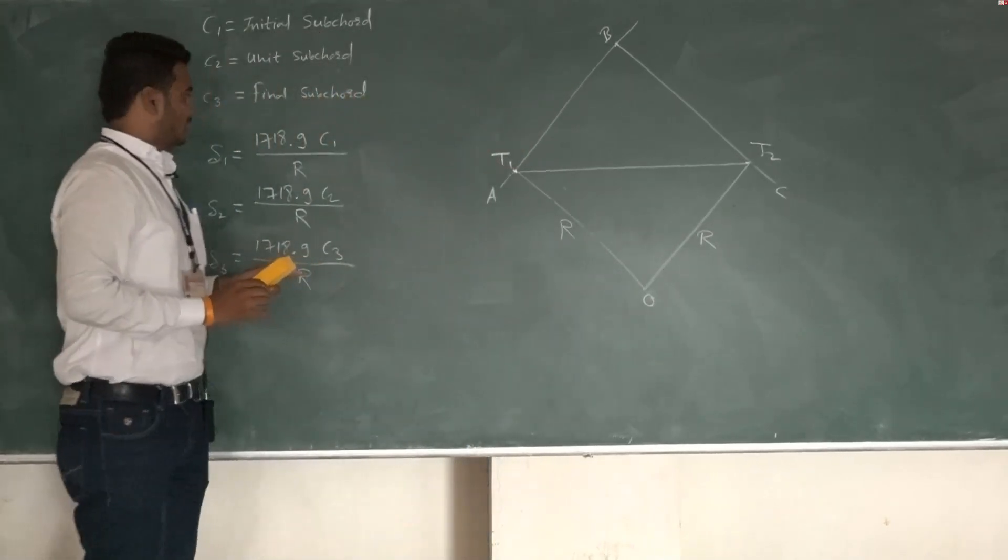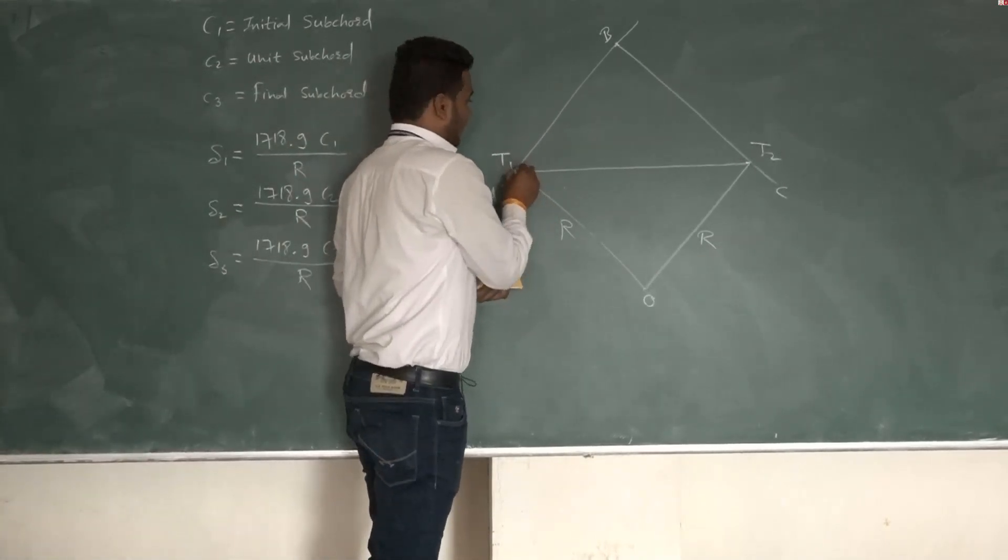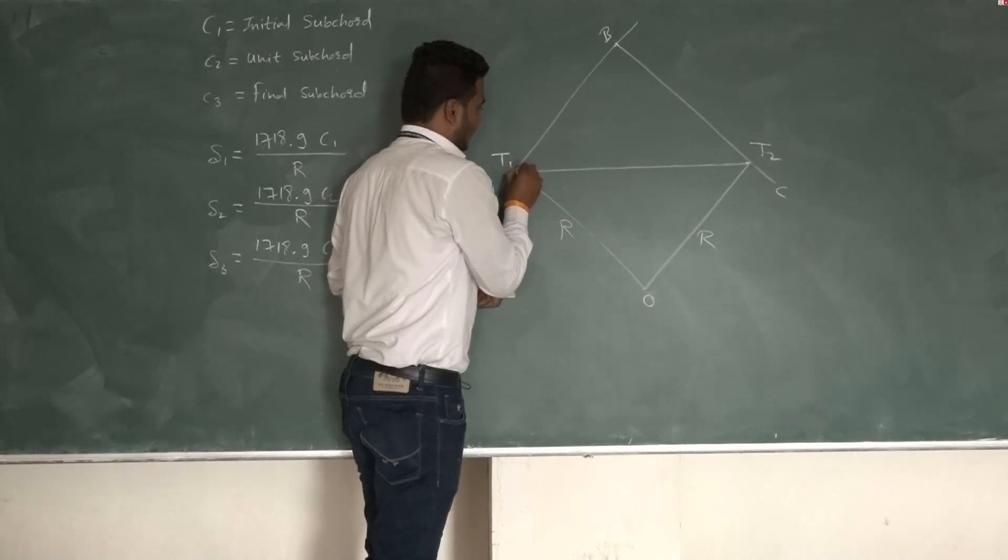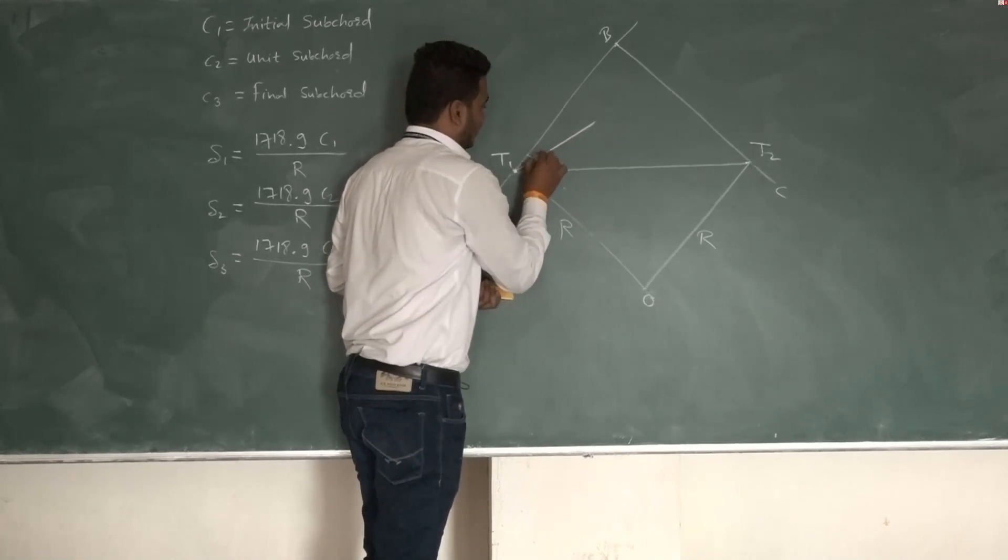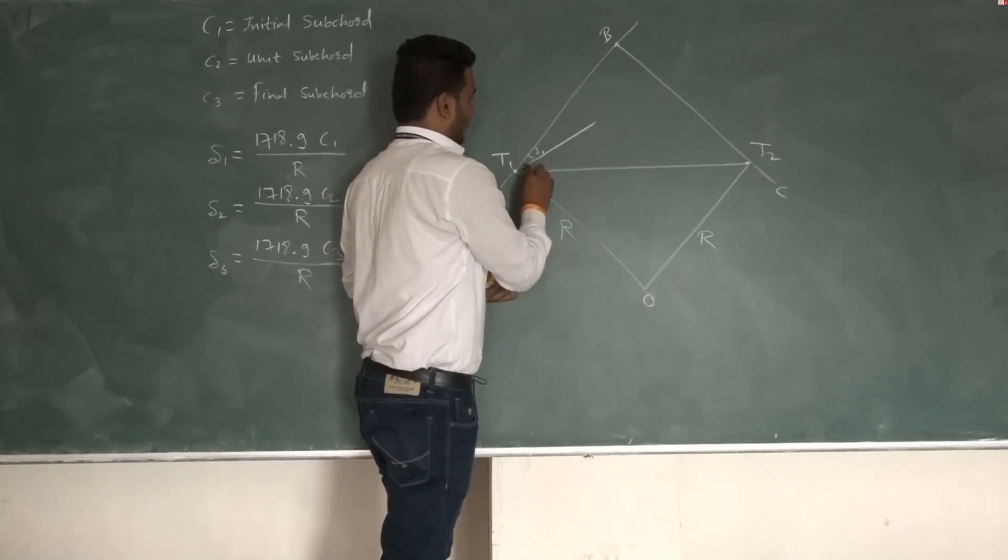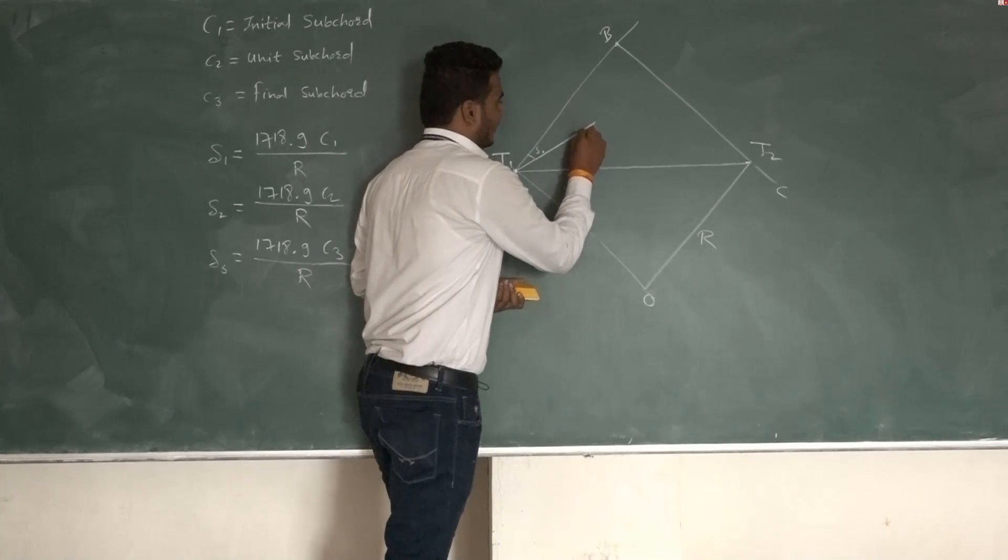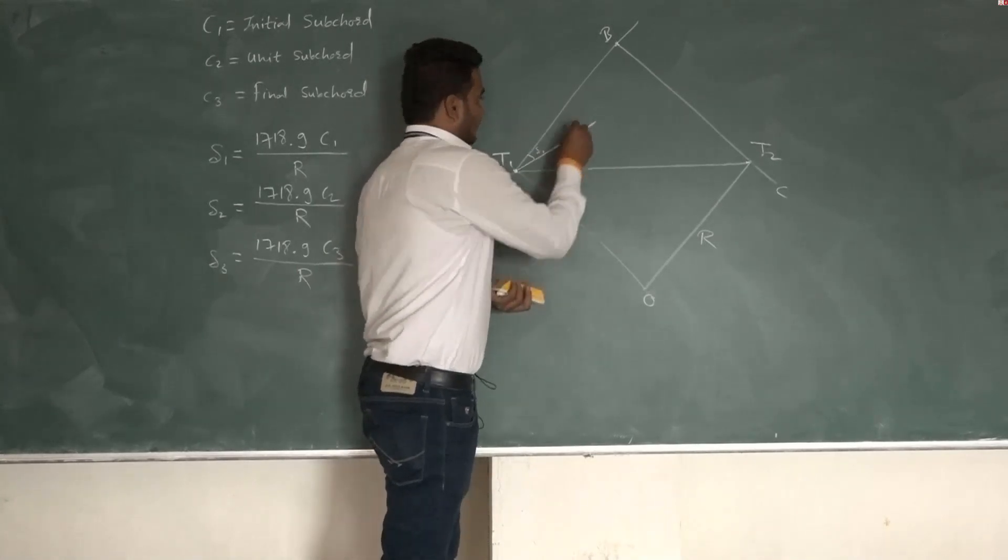Where capital R is the radius of curve. Now from station point T1 take angle delta 1 from station point T1, and on that line at angle delta 1 take point D.